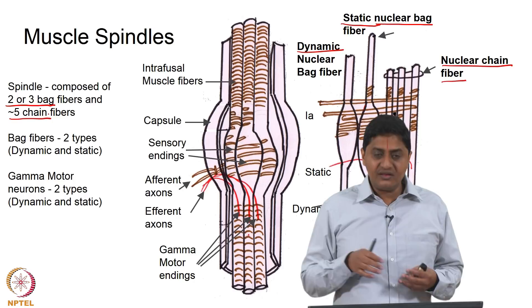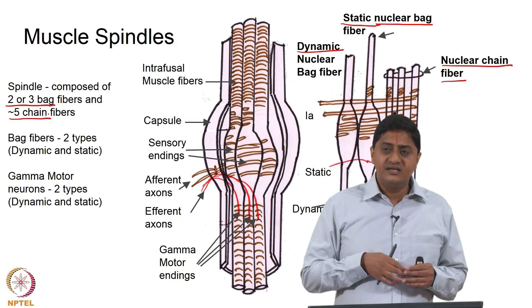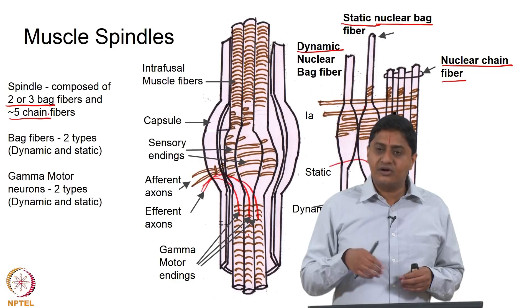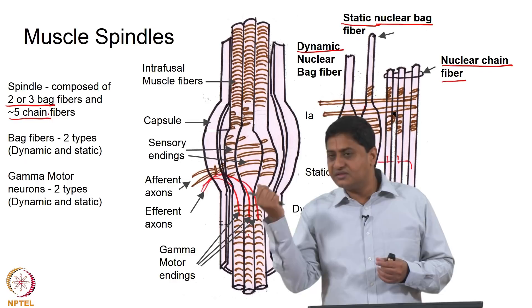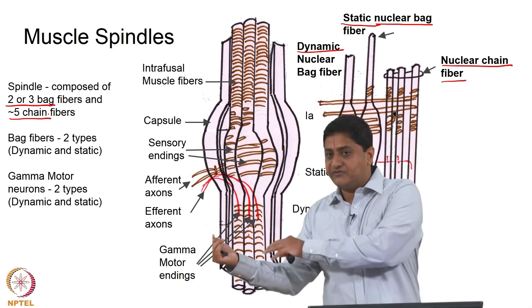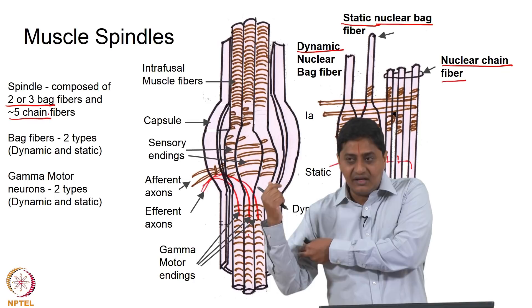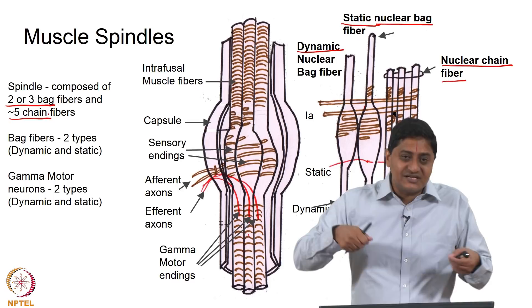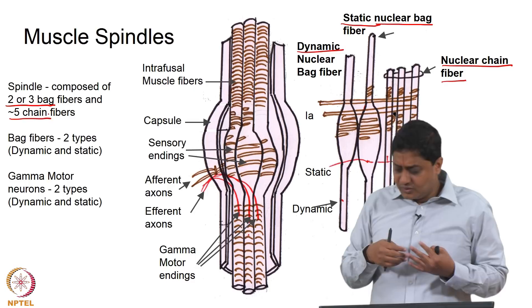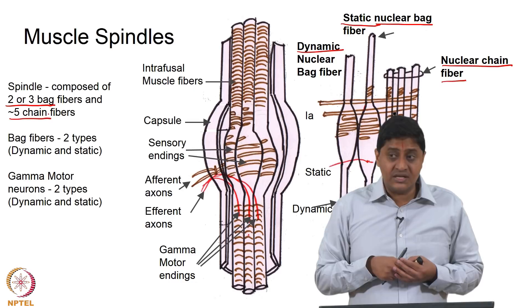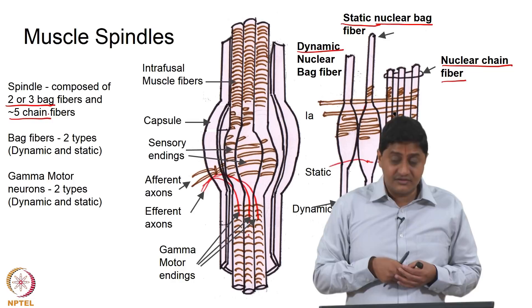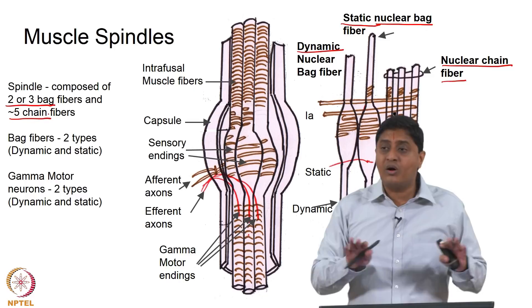The other case is when the antagonist is contracting. For example, when flexing the elbow — reducing the angle between the forearm and upper arm — the biceps is contracting while its antagonist, the triceps, is getting stretched. We need relatively accurate information about the state of the muscle, and this is needed for practically all skeletal muscles. So many spindles are present throughout the body in all muscles.